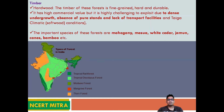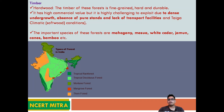Andaman and Nicobar Islands also have this type of vegetation. The timber here is very hardwood because the area receives very high rainfall. This forest has high commercial value, but it is highly challenging to exploit due to dense undergrowth, absence of pure stands, lack of transport facilities, and wildlife like tigers. Important trees include mahogany, mohua, white cedar, jamun, canes, and bamboos.